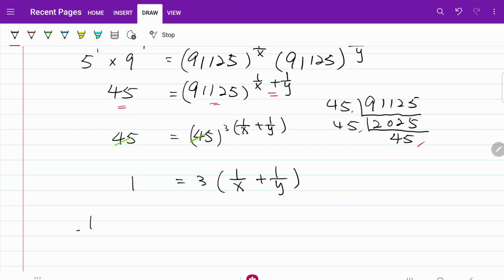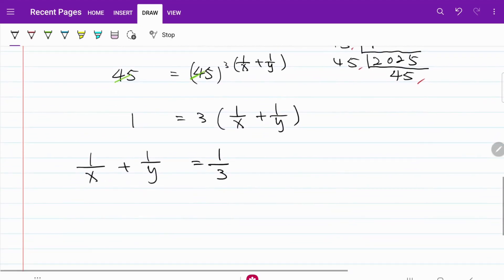In other words, 1 over x plus 1 over y is equal to 1 over 3. And keep in mind the original fraction that we are looking for, xy over x plus y, is equal to the inverse of 1 over x plus 1 over y, which is then equal to 1 over 1 over 3. That's equal to 3.